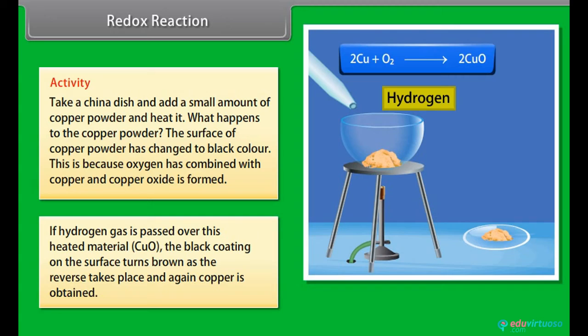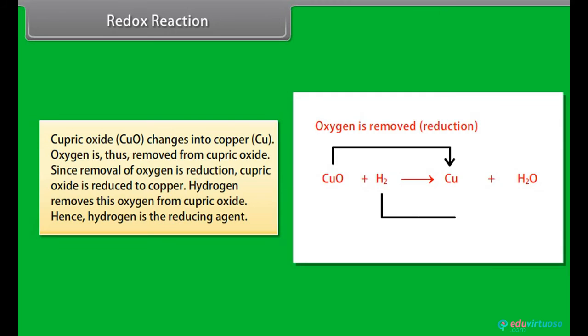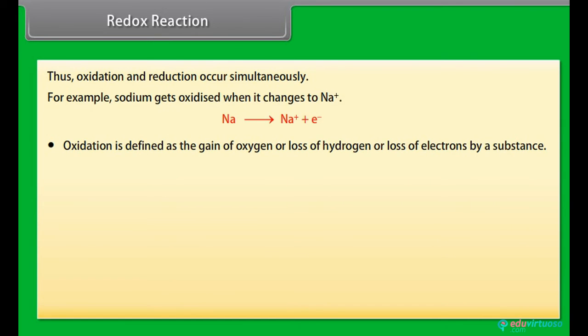If hydrogen gas is passed over this heated material, CuO, the black coating on the surface turns brown as the reverse takes place and again copper is obtained. Cupric oxide changes into copper. Oxygen is thus removed from cupric oxide. Since removal of oxygen is reduction, cupric oxide is reduced to copper. Hydrogen removes this oxygen from cupric oxide. Hence, hydrogen is the reducing agent. Thus, oxidation and reduction occur simultaneously. For example, sodium gets oxidized when it changes to Na plus. Oxidation is defined as the gain of oxygen or loss of hydrogen or loss of electrons by a substance. Reduction is defined as the gain of hydrogen or loss of oxygen or gain of electrons by a substance.